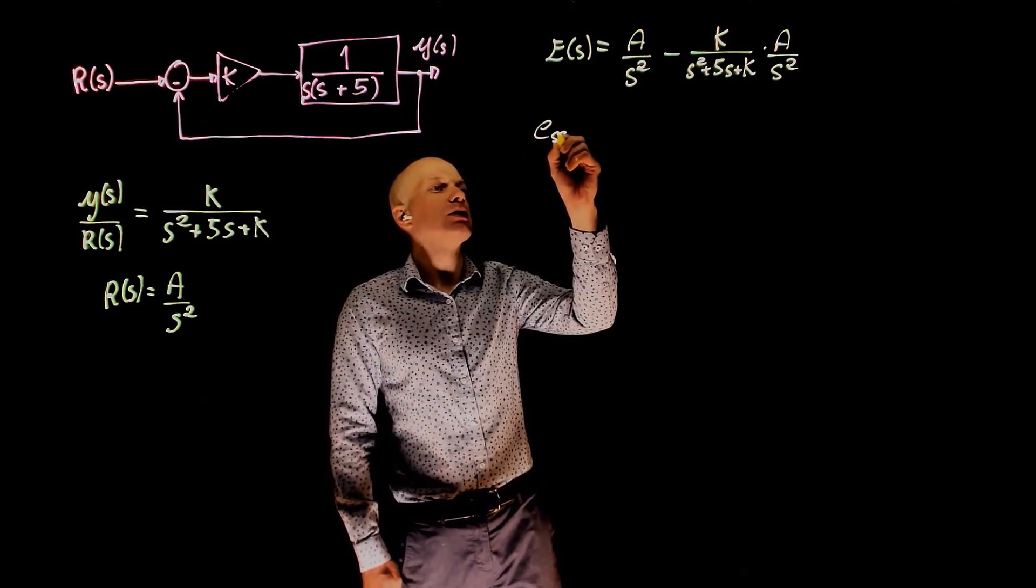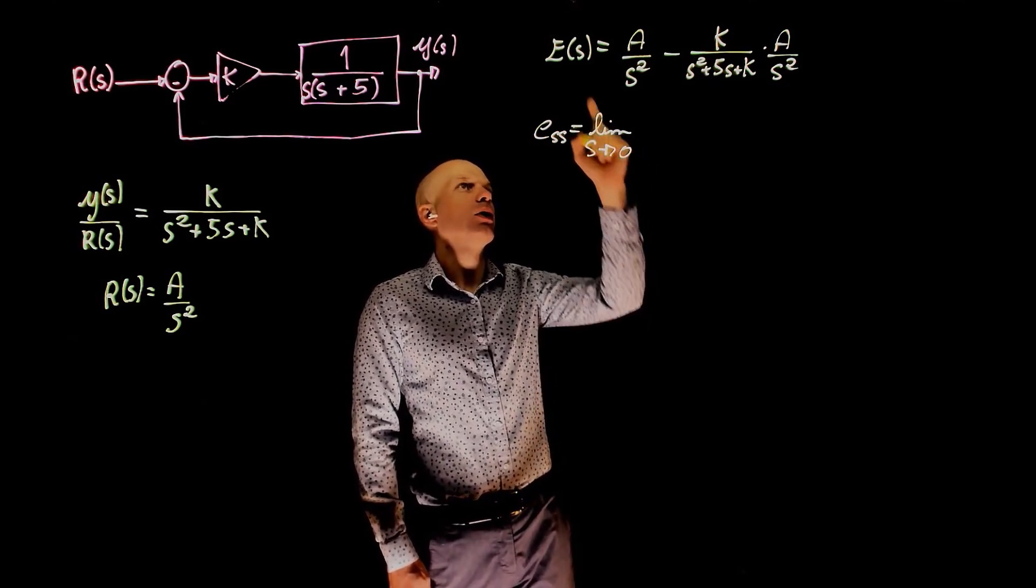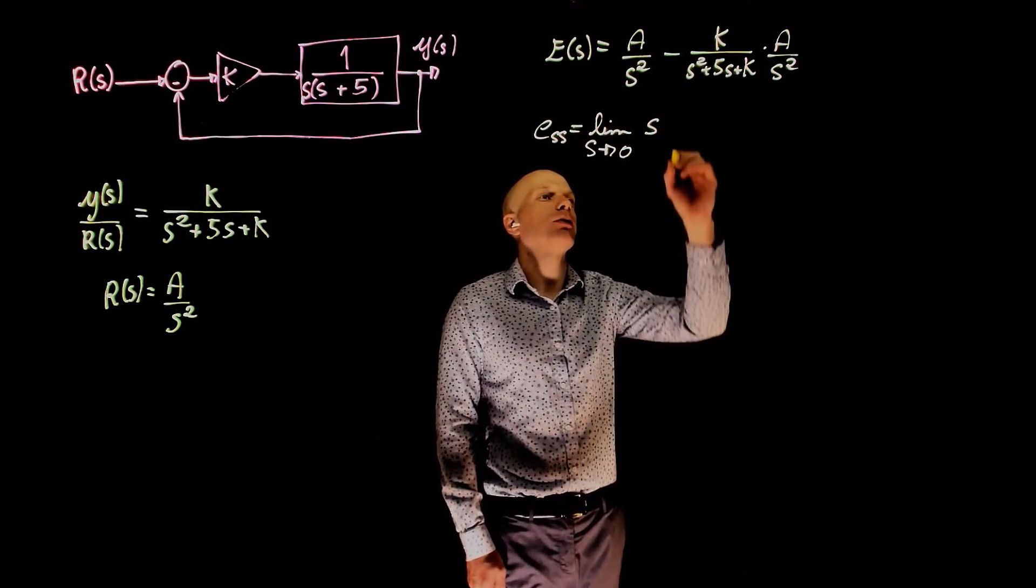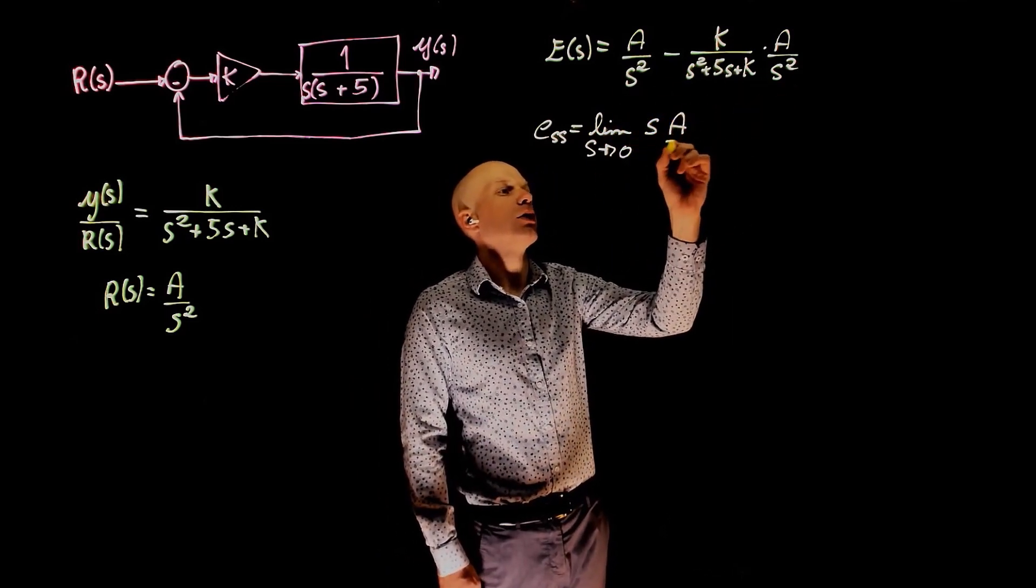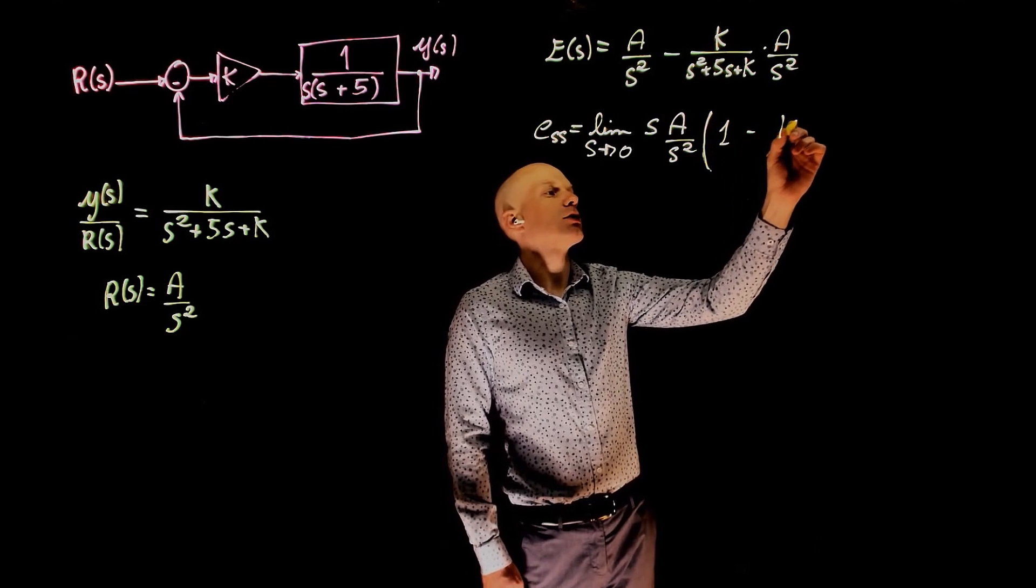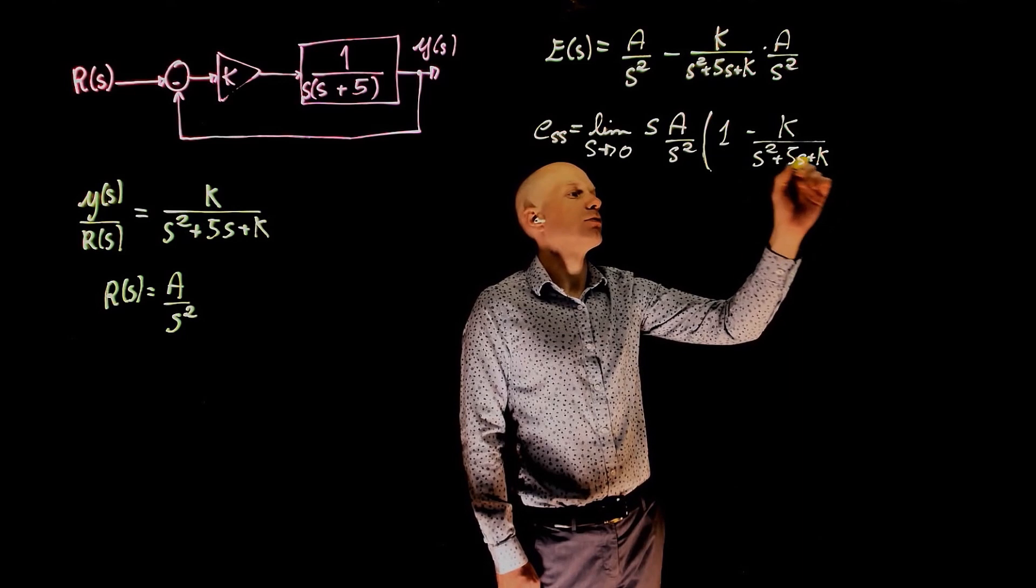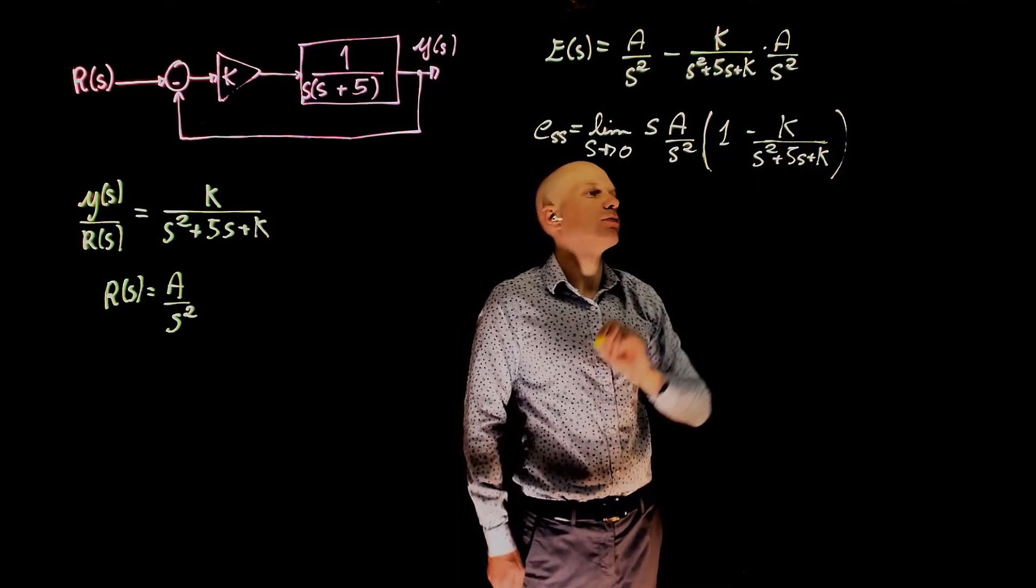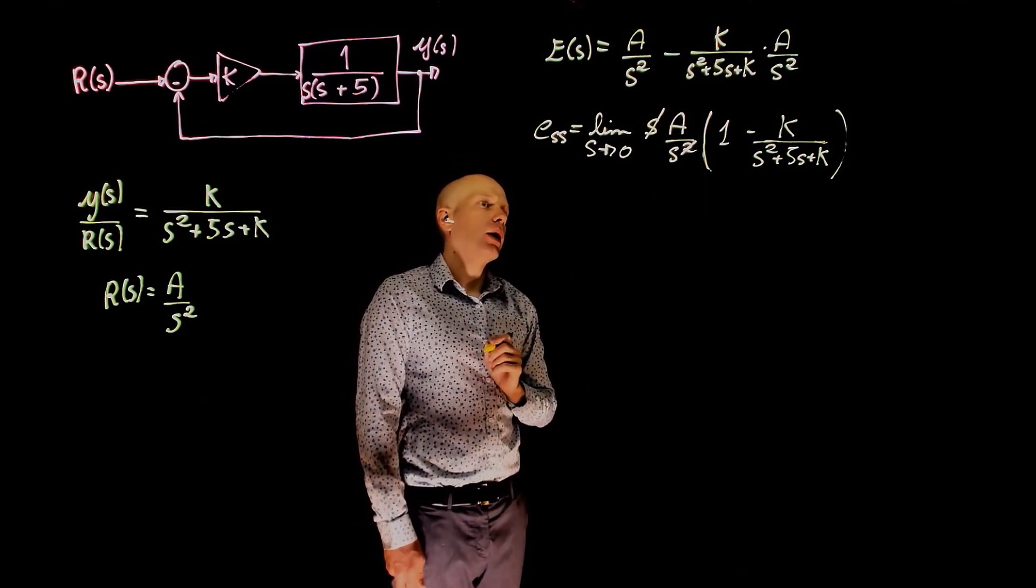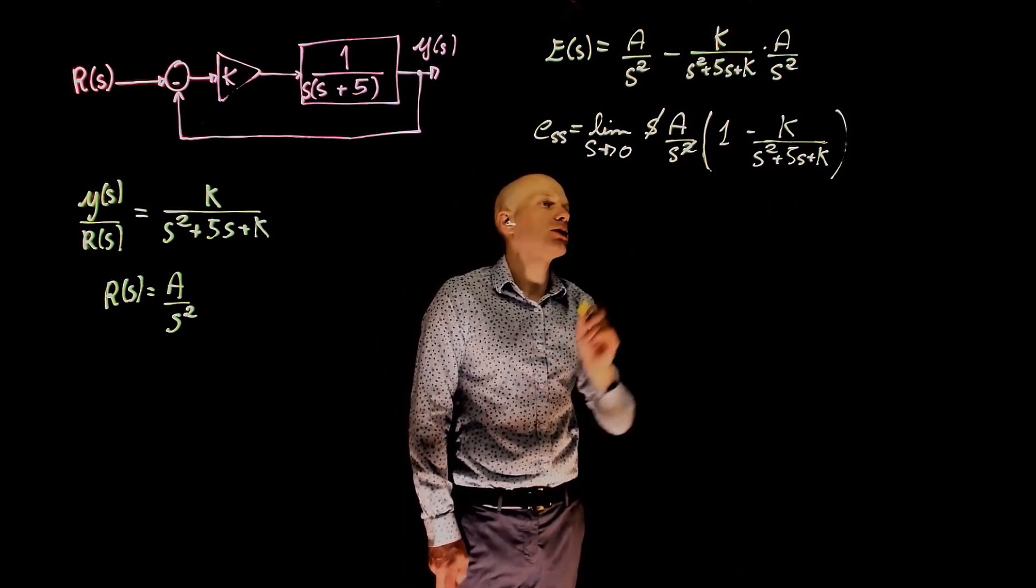We know that the error in steady state is the limit when S tends to zero of the error times S. So the limit of S times this entire function. I'm going to factor here A over S squared. And we are left with 1 minus k over S squared plus 5s plus k. So this S cancels one of these two S's. And now we cannot simply assume that when S tends to zero, this goes to infinity. We need to rearrange this expression here.